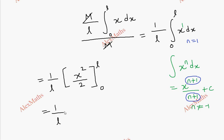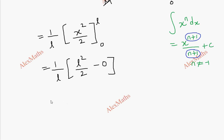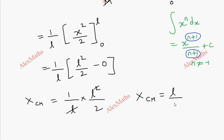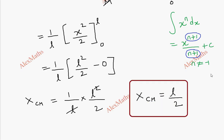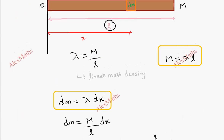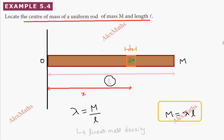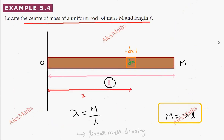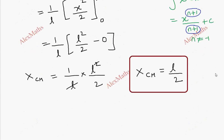So we have (1/L) times [L²/2 minus 0], which gives (1/L) times L²/2. The L cancels, so x_cm equals L/2. The center of mass is at the geometric center — which is correct, since the total length is L and L/2 is the midpoint.